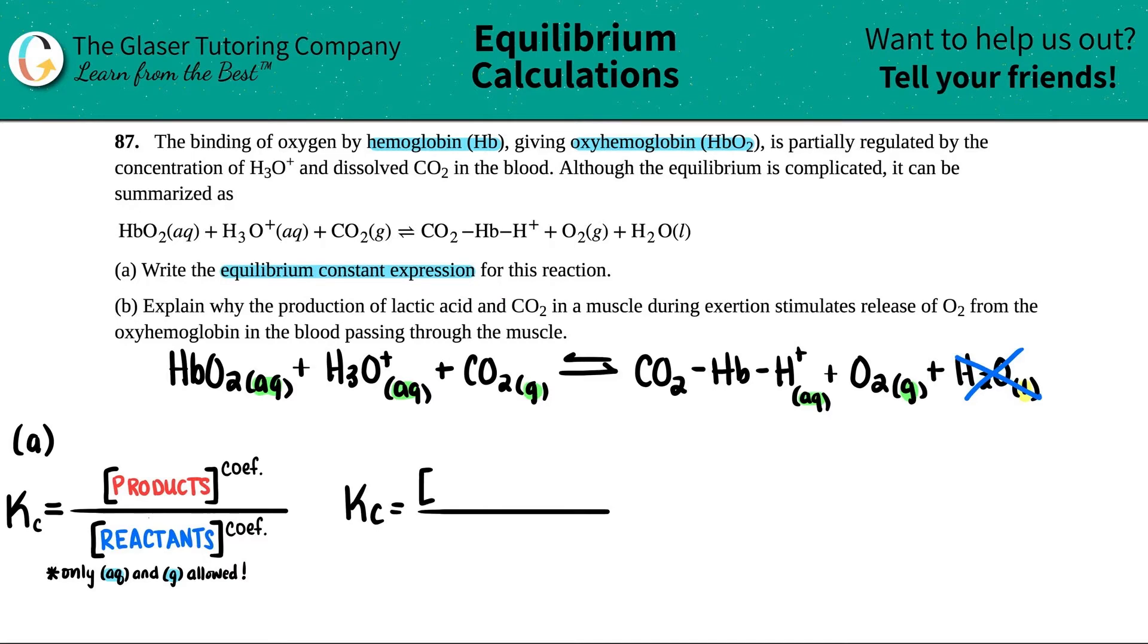So Kc equals concentration of products over reactants. I have two products now. I don't care about the H2O. I don't care about the other two. So this would be the CO2, Hb, H+. And just look at the coefficient, and this is a balanced equation. All of them are raised to the first because there's a one coefficient here. So I just keep going on. I times it by the O2.